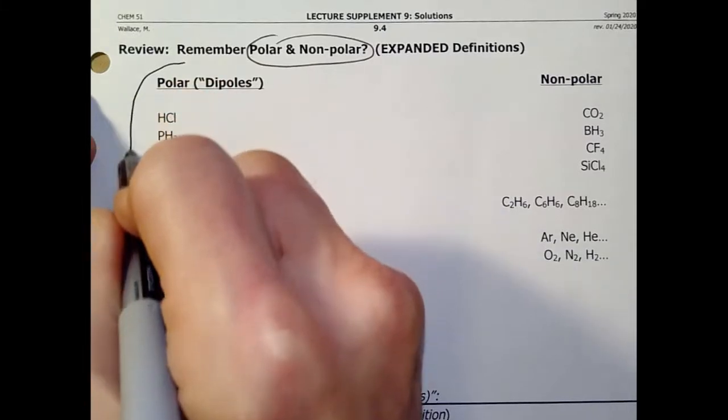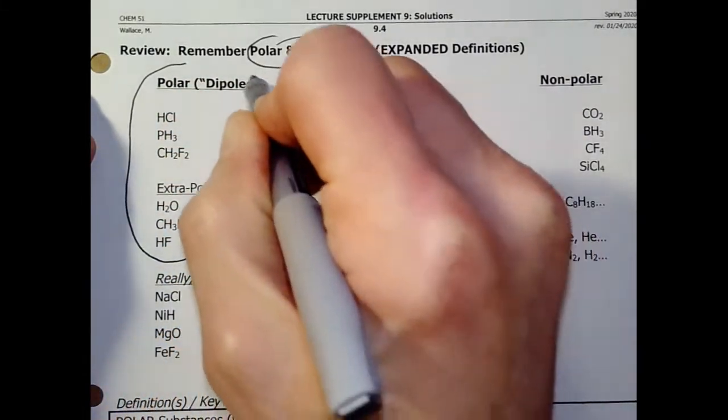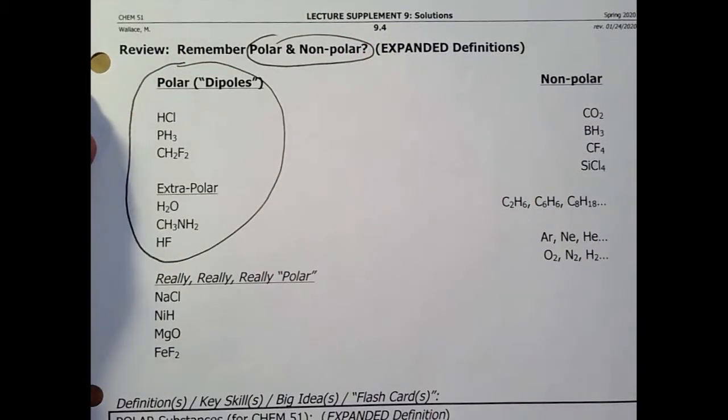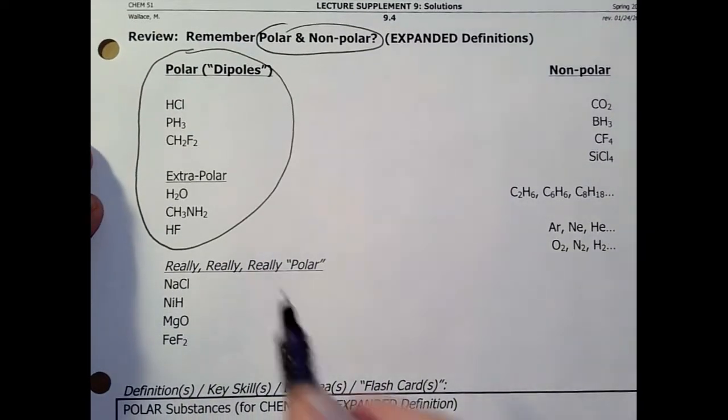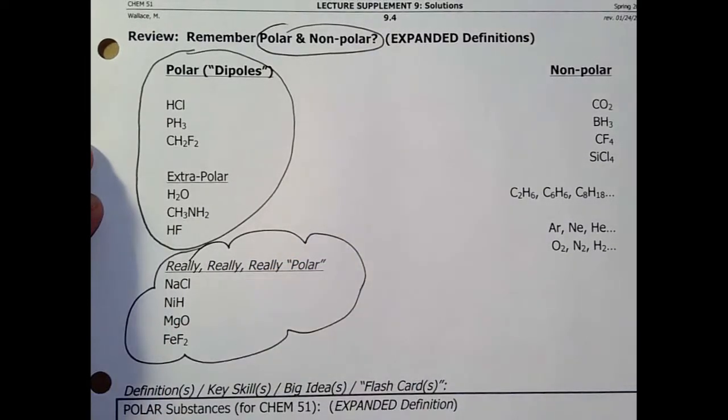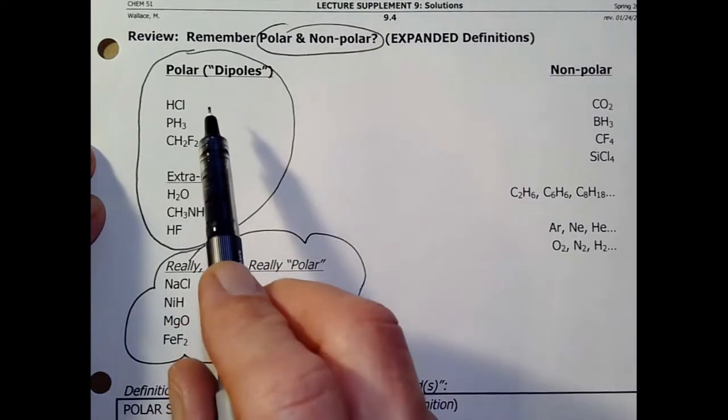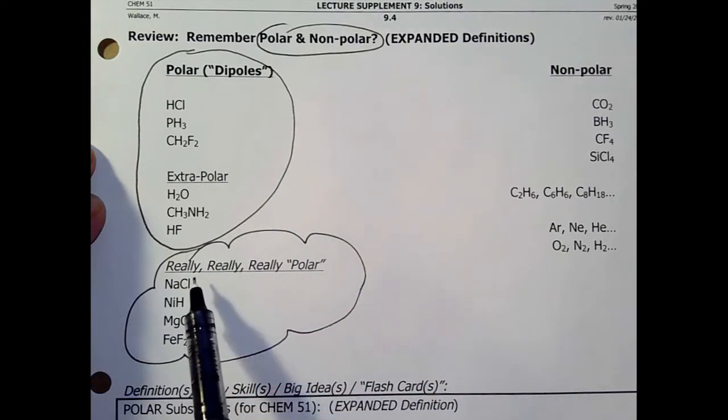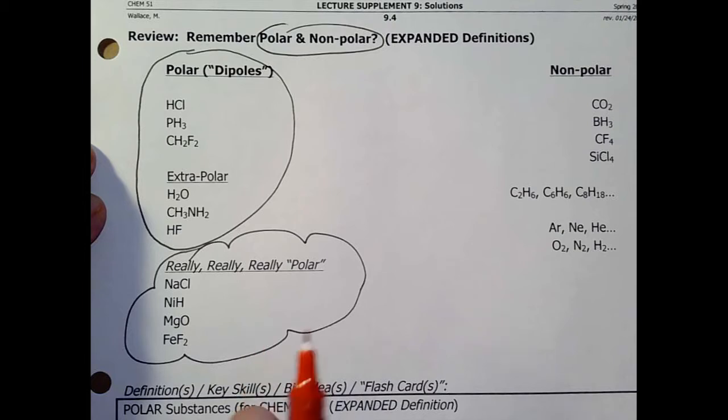I'm saying these are polar. And if we drew those Lewis structures, they would be just fine. They would look exactly like what we said in chapter four. Now, I'm adding to that really, really, really polar. You might stop the video for a second and say, wait, what do those have in common? Did you think about that? Good.